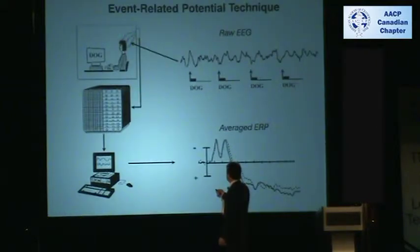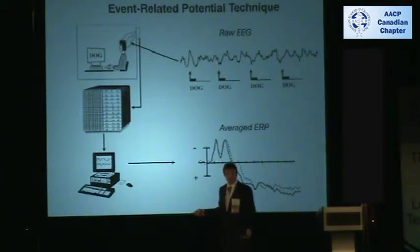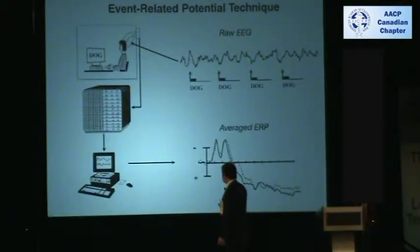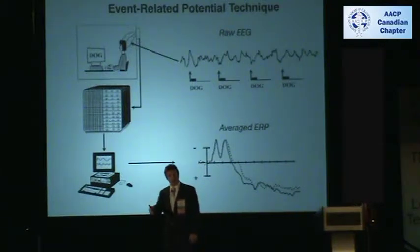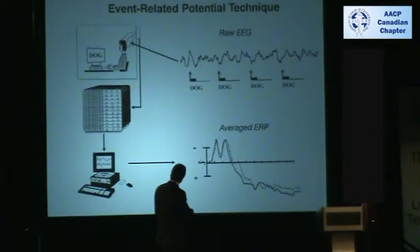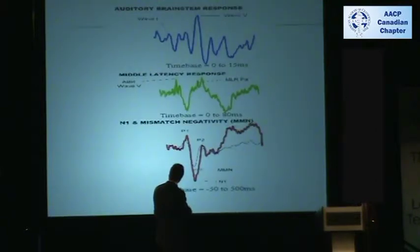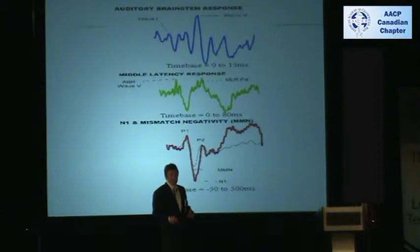What we have here is some of the electrodes, being presented in this instance with visual stimuli. In event-related potentials, what we're doing is averaging the raw EEG that's going on. We're presenting a stimulus and a stimulus and a stimulus, and then averaging it out. When we average it out, we can tell different parts of the brain whether or not they're behaving or functioning properly.